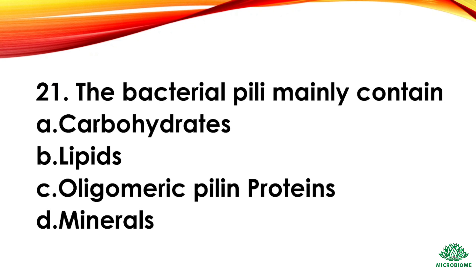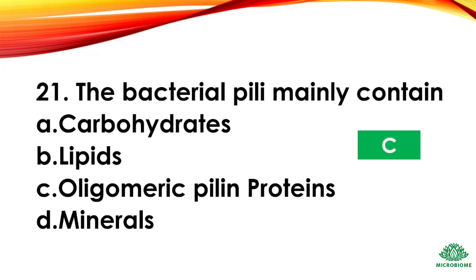Question 21: Bacterial pili mainly contain — options: carbohydrates, lipids, oligomeric pilin proteins, minerals. The right answer: option C, oligomeric pilin proteins.